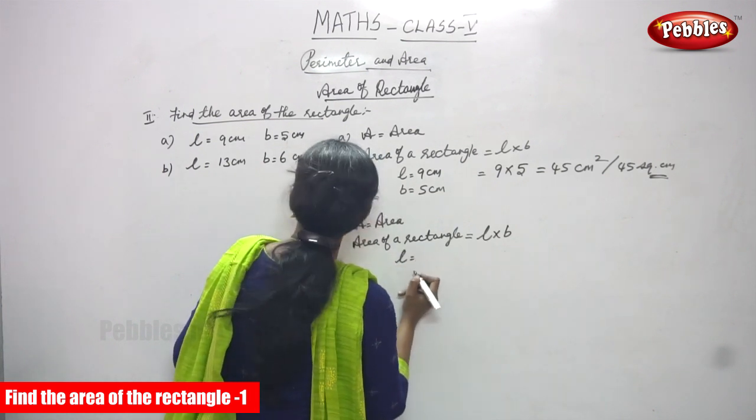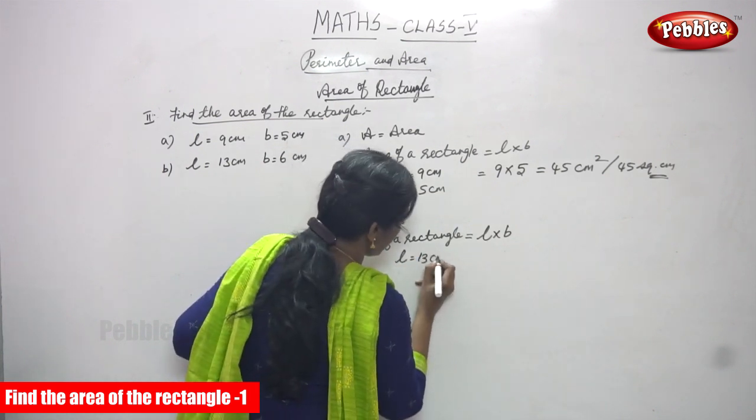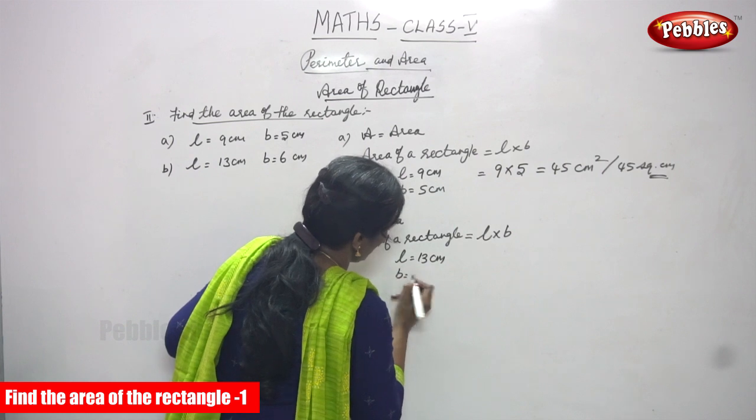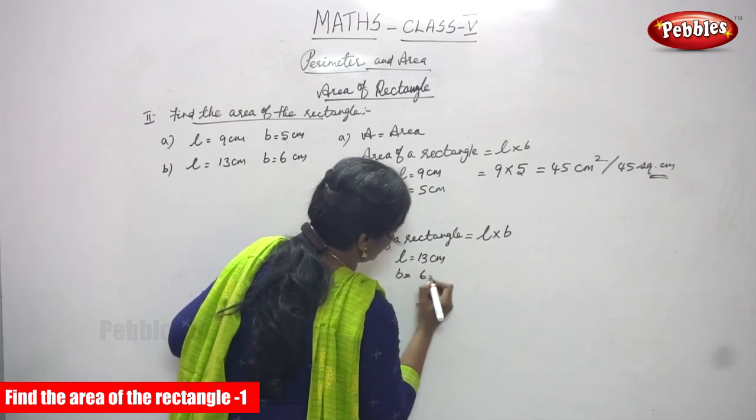So what is the value of L is given, 13 cm and B is equal to 6 cm.